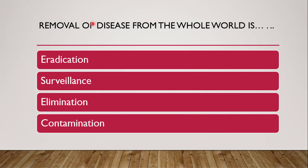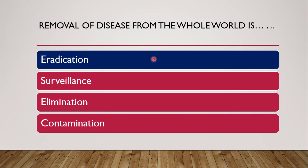Next question: removal of disease from the whole world is called — whether it is eradication, surveillance, elimination, or contamination. The correct answer is eradication. Surveillance cannot be called the removal of disease. Elimination refers to removal of disease confined to a particular country, community, region, or village. Removal of disease from the entire world is eradication.